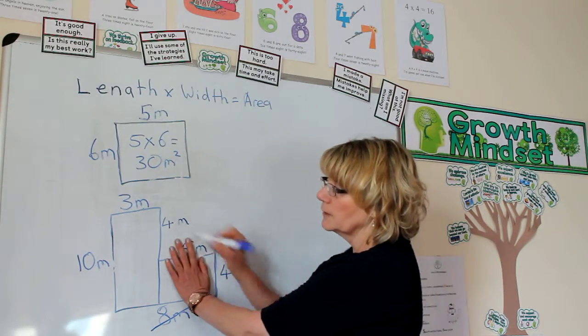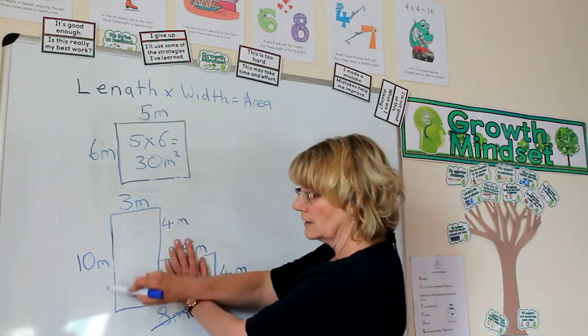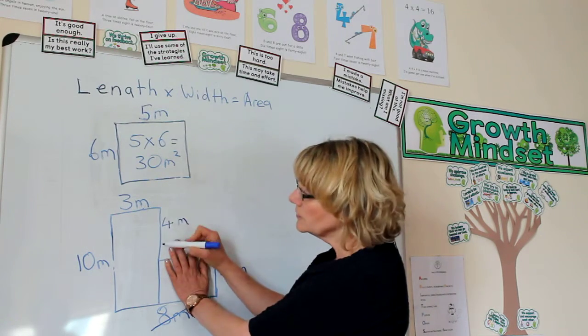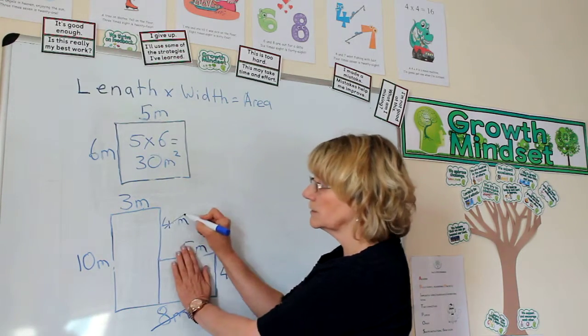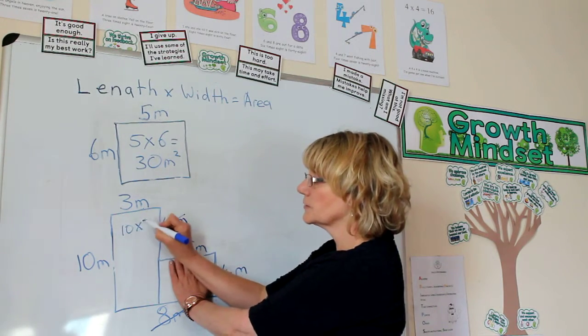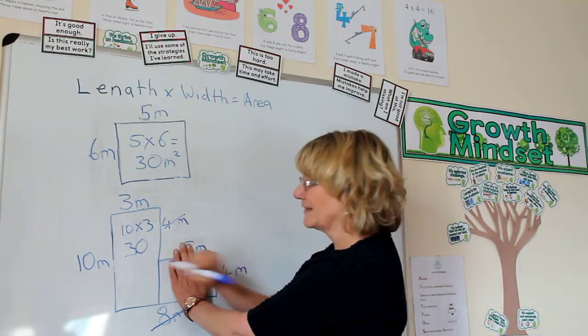Now to work out this rectangle, I would do the length times the width. I would ignore this 4, and the reason I would ignore it is because it only goes to there. So it doesn't help us. I'm just going to cross that off. 10 times 3 is 30. Simple.